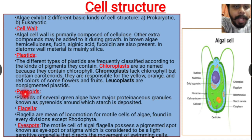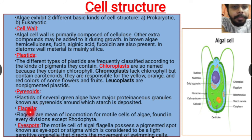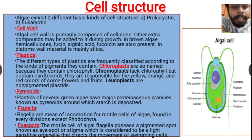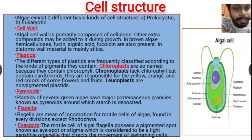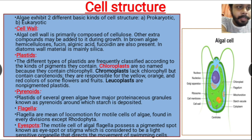Plastids of several green algae have major proteinaceous granules known as pyrenoids, around which starch is deposited. Flagella are the means of locomotion for motile cells of algae, and are found in every division except Rhodophyta. The motile algal cells also possess a pigmented spot known as the eyespot or stigma, which is considered a light-sensitive organelle that directs the swimming of cells.